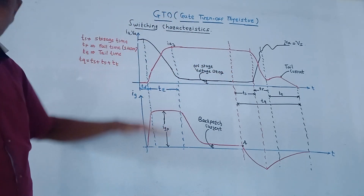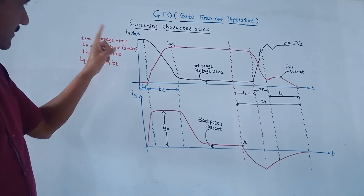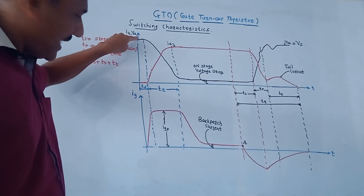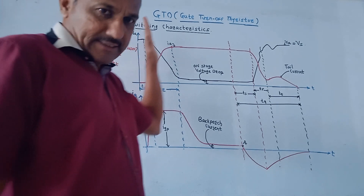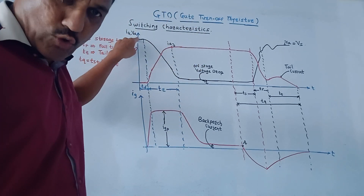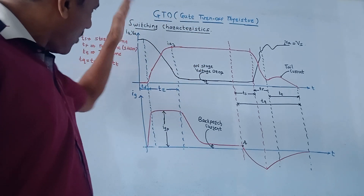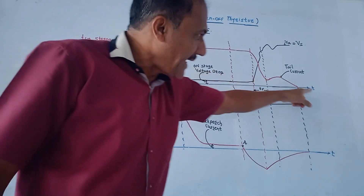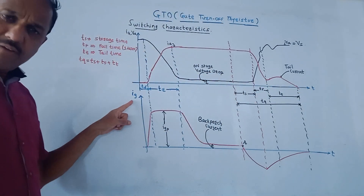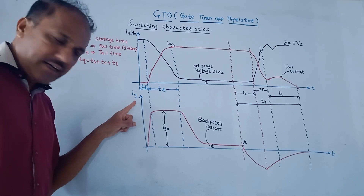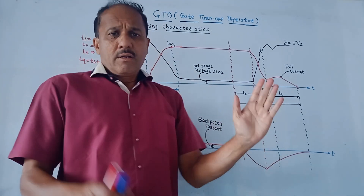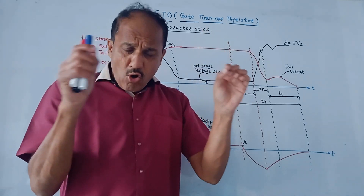Now let us discuss the switching characteristics of GTO. I have drawn two graphs: the first graph shows anode current Ia and anode voltage Va on the Y-axis versus time on the X-axis. The second graph shows gate current Ig versus time.